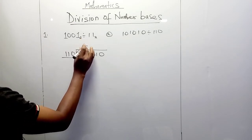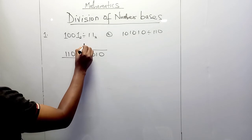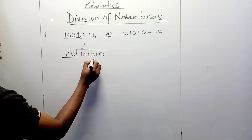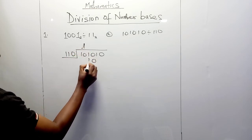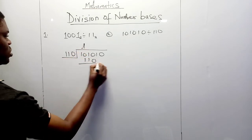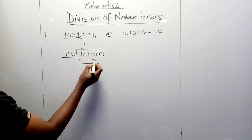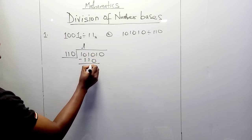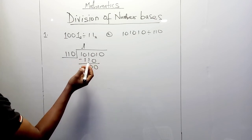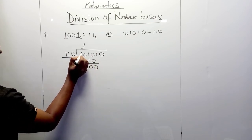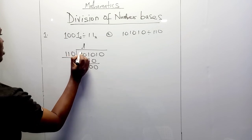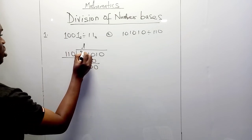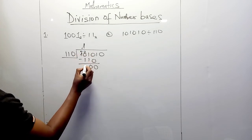Just like the earlier example, we use this 1 to multiply 110. So 1 times 0 is 0, 1 times 1 is 1, 1 times 1 is 1, giving 110. We subtract: 0 minus 0 is 0, 1 minus 1 is 0. Then 0 minus 1 is not possible, so we borrow from the 1, which becomes 0, and the borrowed 1 becomes 2. So 2 minus 1 is 1.